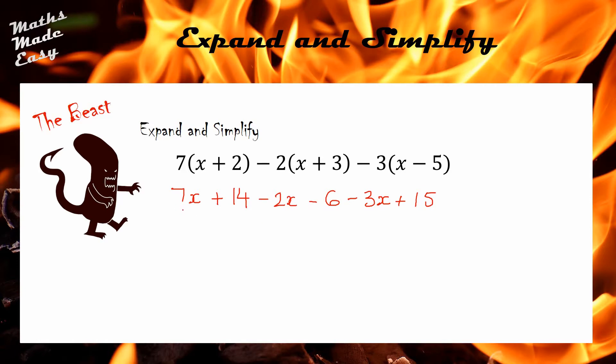There's obviously a lot more terms here to simplify, so I'm going to revert to underlining common terms so I don't miss any. I've got 7x's take away 2x's take away 3x's, which in total gives me 2x left over. Then if I look at my integer values, I've got plus 14, I've got minus 6 and a plus 15, and all of those together give me positive 23. That is the beast sorted.